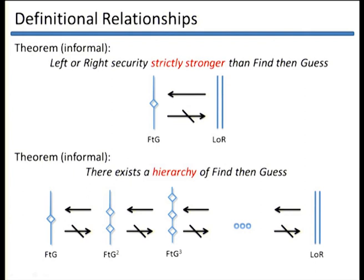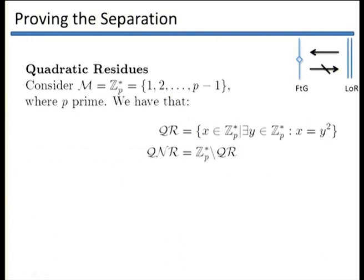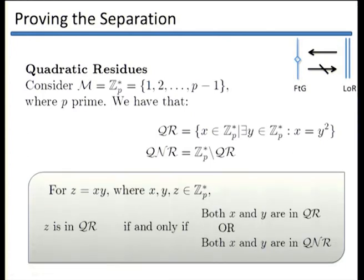I will present the proof of the first theorem — the separation result between FTG and left-or-right. As usual, we assume there exists an FTG-secure scheme Pi, and we construct a new scheme Pi-star which is FTG-secure but not left-or-right secure. The message space consists of the integers modulo a prime P. The set of quadratic residues (squares modulo P) and the set of quadratic non-residues are defined. From number theory, a product of two numbers in Z_P* is a square if and only if both factors are in QR or both are in QNR.